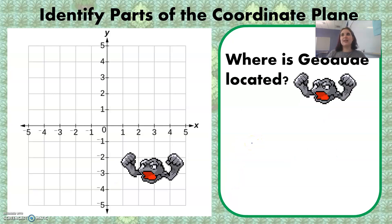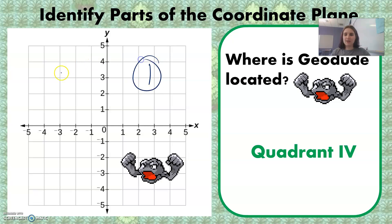And finally, where is Geodude located? Geodude is located in quadrant four. So remember, it goes one, then two, then three, then four.